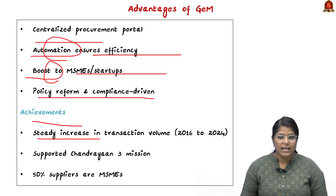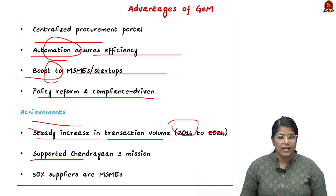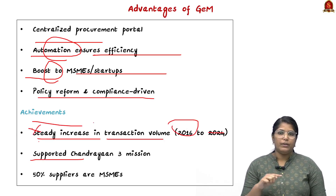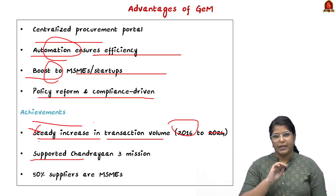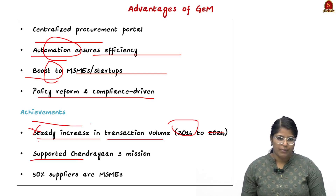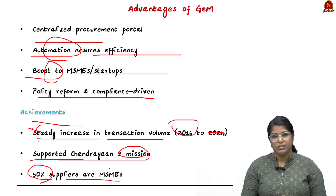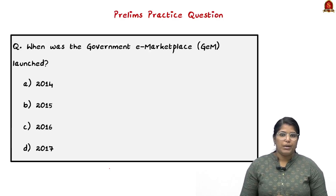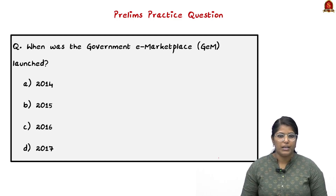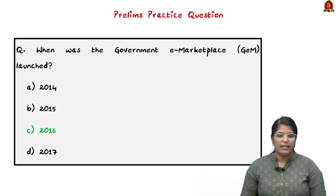Regarding achievements: there has been a steady increase in transaction value from 2016 to 2024, with growth consistently moving upward with no decline in any year. It has supported the Chandrayaan-3 mission and provides 50% of suppliers from MSMEs, which is very significant. A prelims question: when was Government e-Marketplace launched? The correct answer is 2016.